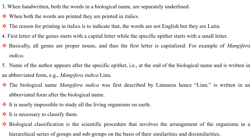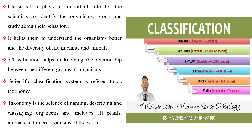It is nearly impossible to study all the living organisms on Earth, so it is necessary to classify them. Biological classification is the scientific procedure that involves the arrangement of organisms in a hierarchical series of groups and subgroups on the basis of their similarities and dissimilarities. Classification plays an important role for scientists to identify organisms, group them, and study their behavior. It helps them understand organisms better and the diversity of life in plants and animals, and it also helps in knowing the relationships between different groups of organisms.